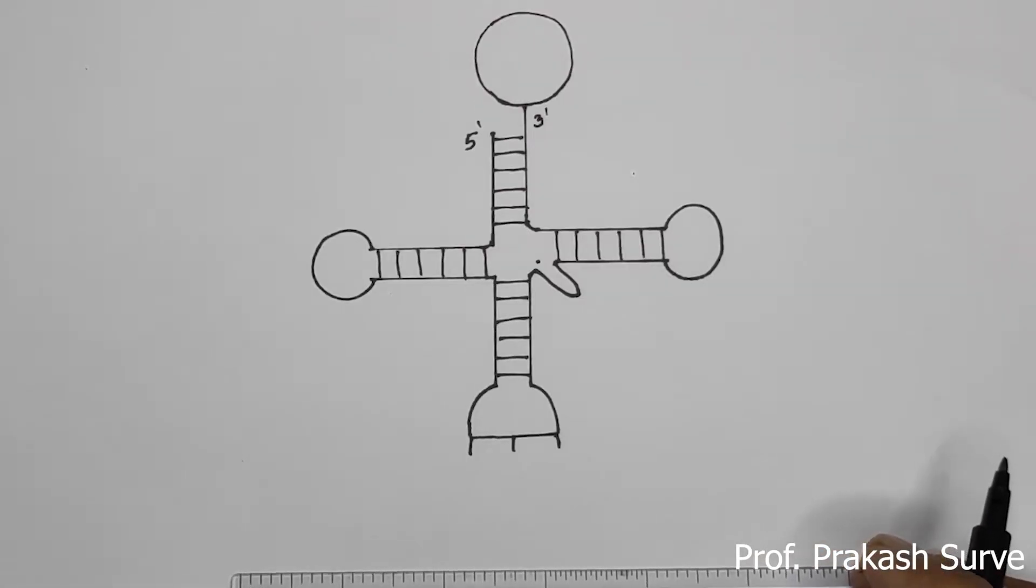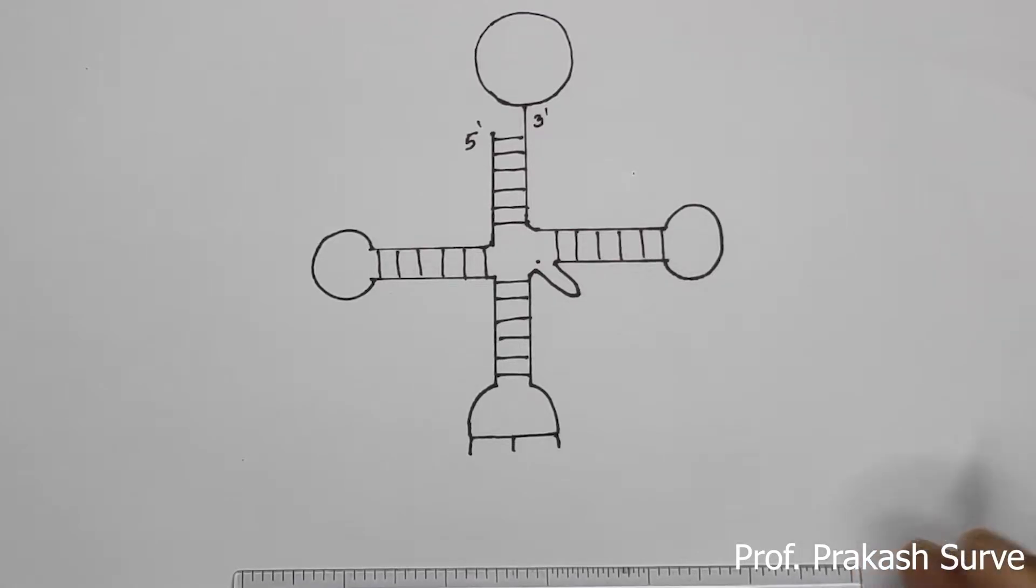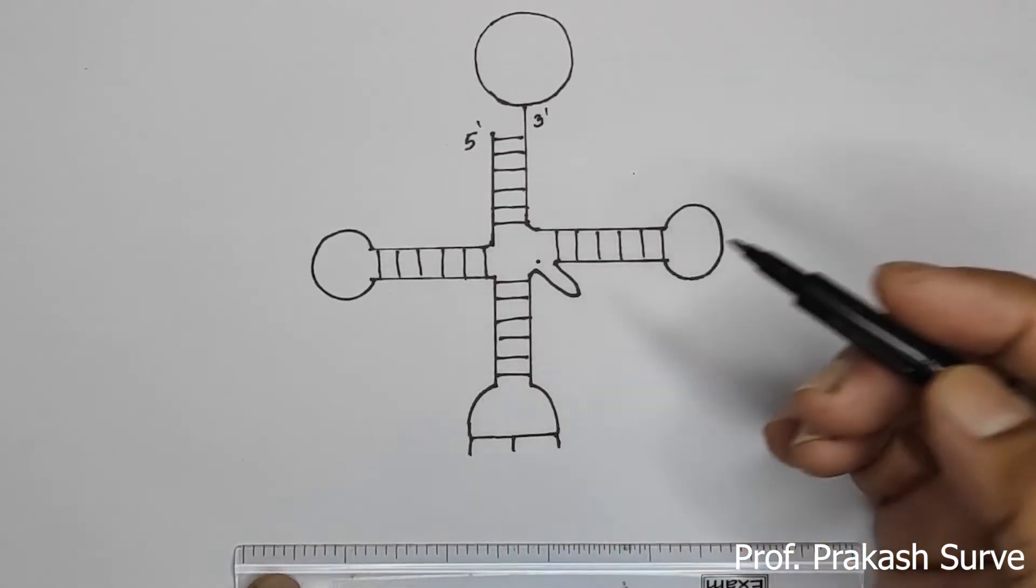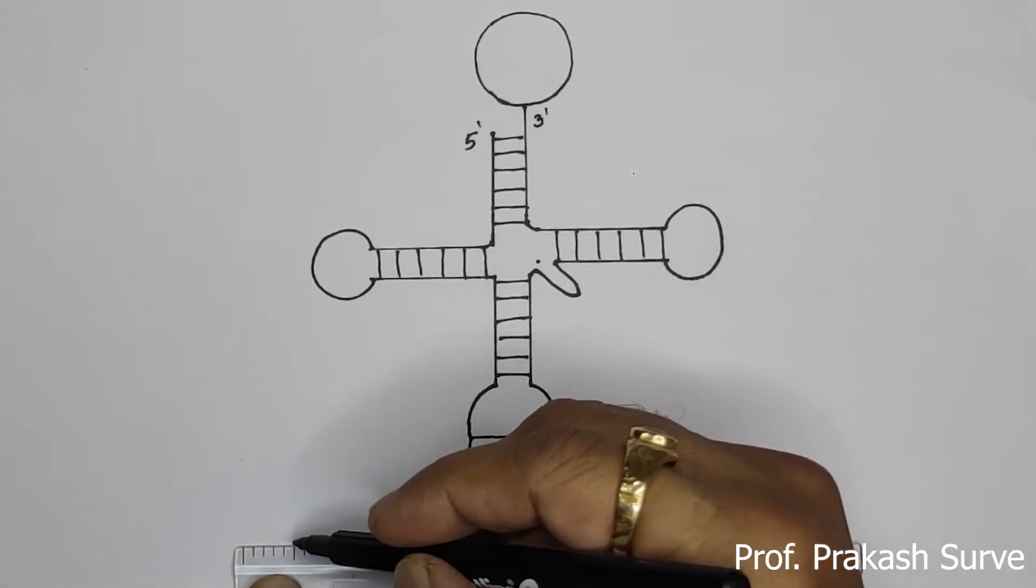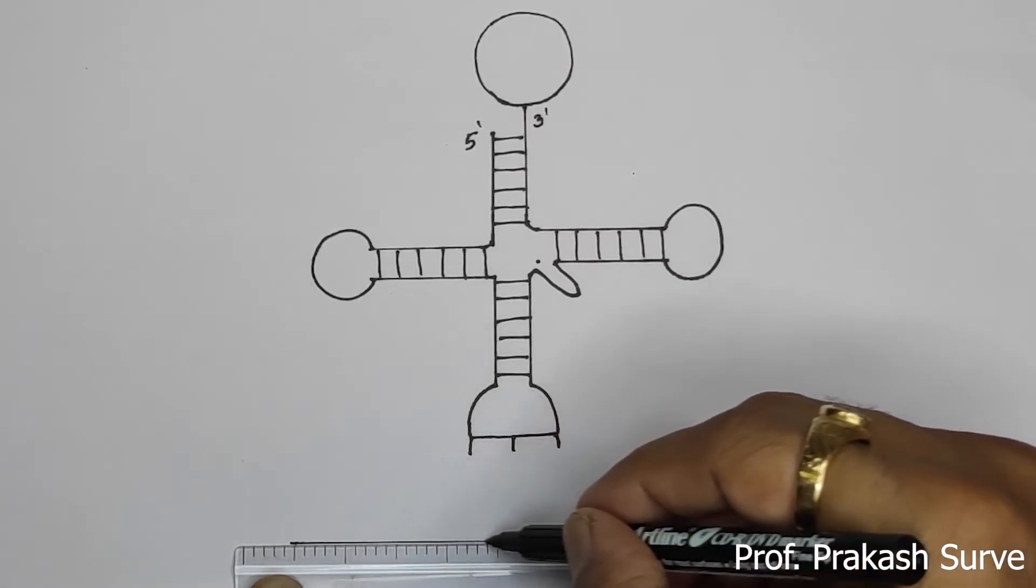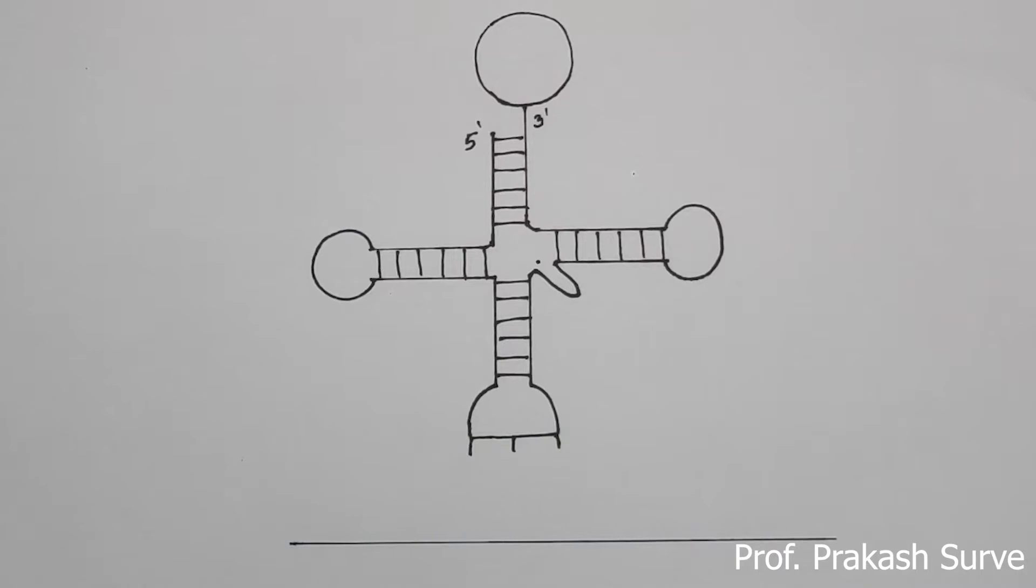Now here we will make one line that is for the mRNA. So this line indicates mRNA.